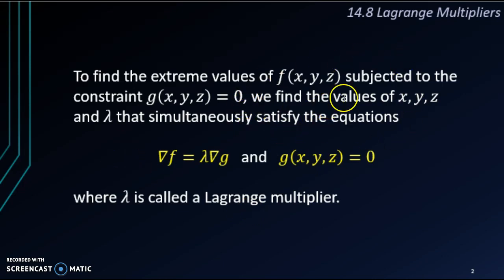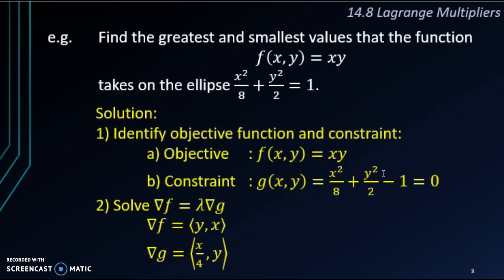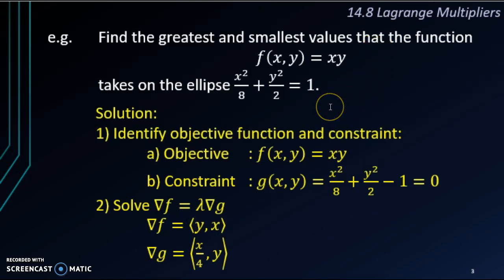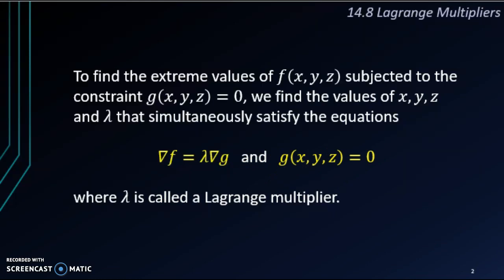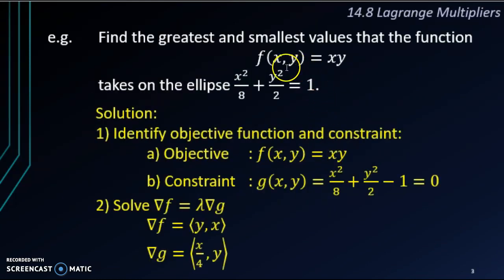This method is applied when we are given a constraint to find a maximum or minimum of f. For example, if we want to find the greatest and smallest value of f equals to xy on the ellipse x squared over 8 plus y squared over 2 equals to 1. The first step is to identify the objective function and the constraint. The objective function is f equals to xy, and the constraint is g equals to x squared over 8 plus y squared over 2 minus 1 equals to 0.